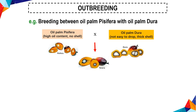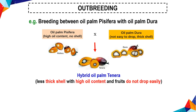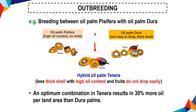Another example of out-breeding is the cross between oil palm Elaeis guineensis (dura) and oil palm (pisifera). Oil palm dura has high oil content but a thick shell, while pisifera has no shell but fruit drops easily. Their hybrid, oil palm tenera, has a less thick shell with high oil content and fruit that does not drop easily.